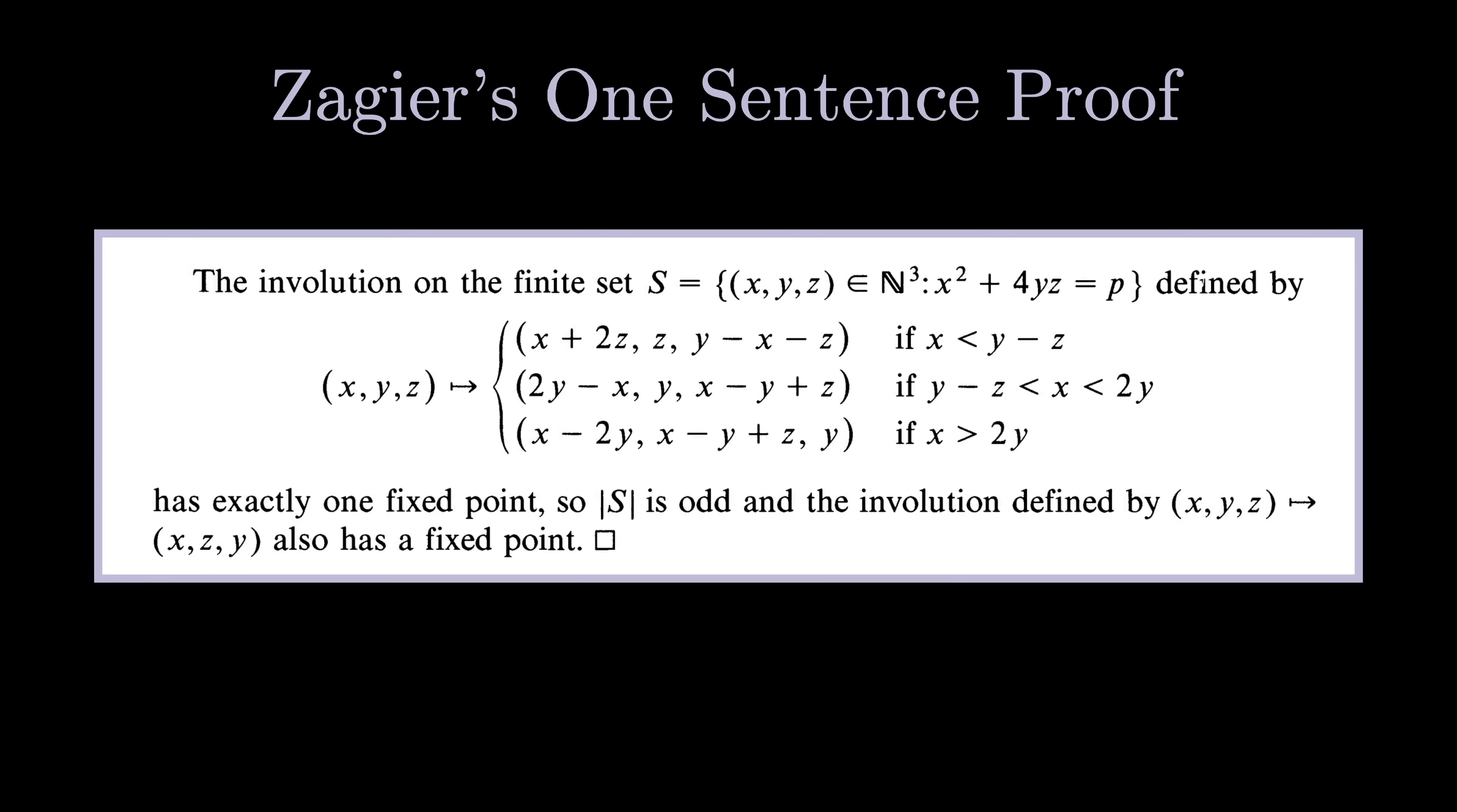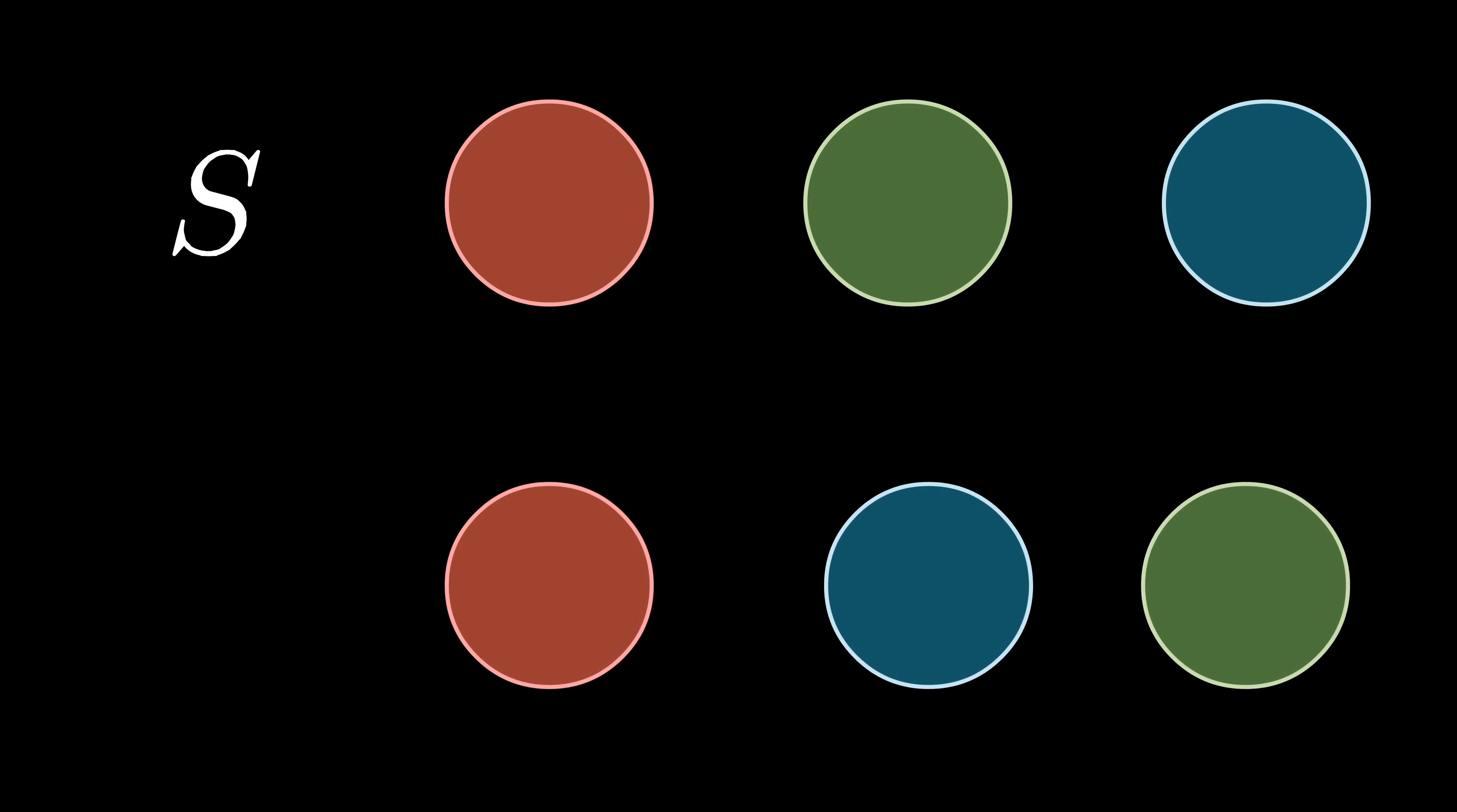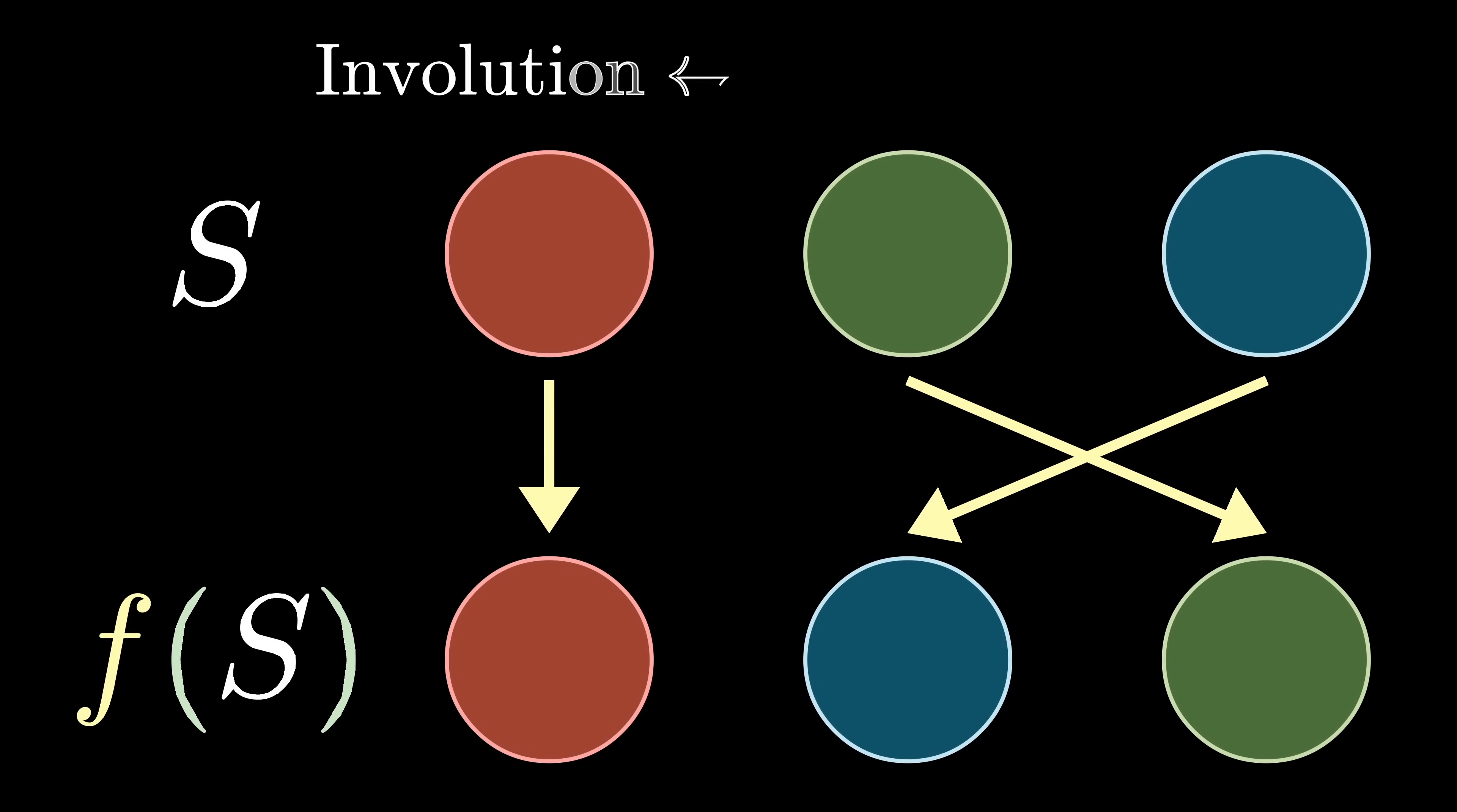Before we delve into the proof, let's cover some background. The first two words of the proof are 'the involution'. So what even is an involution? Consider a set S. An involution is a function that is its own inverse. In other words, f(f(x)) = x for all x in S.